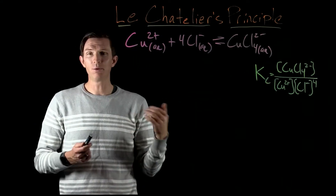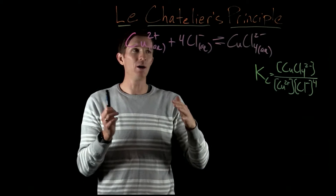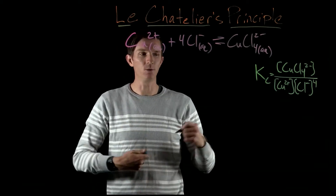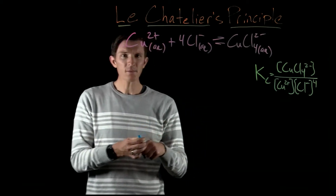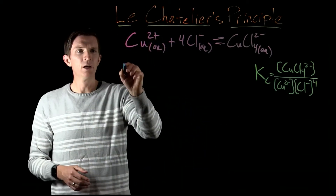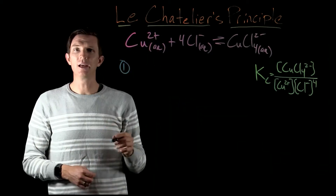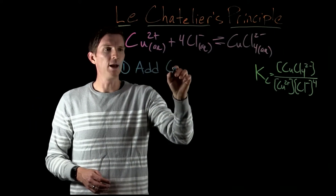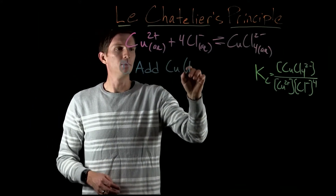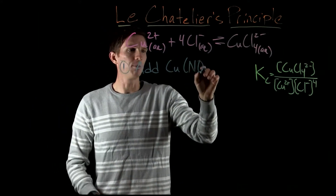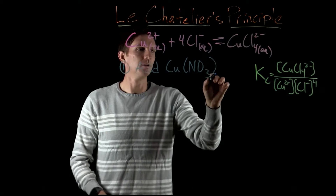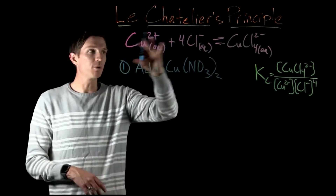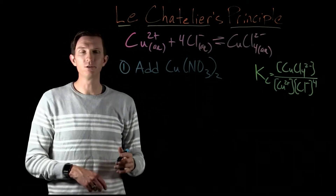We're going to look at a few examples of how an equilibrium can be shifted. First, let's say we add copper nitrate to the solution.